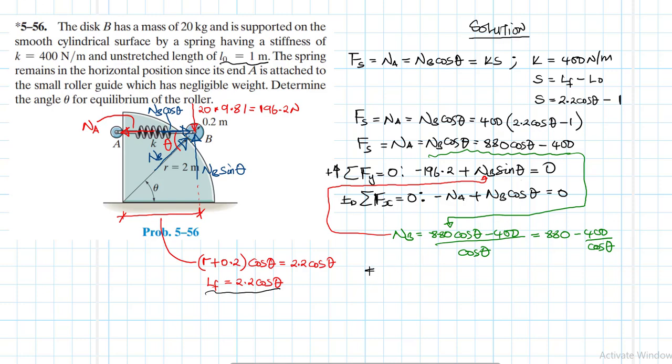We'll replace this in the first equation. We're going to have minus 196.2 plus 880 minus 400 divided by cos theta times sine theta equal to zero. When we simplify, this becomes minus 196.2 plus 880 sine theta minus 400 tan theta equal to zero.